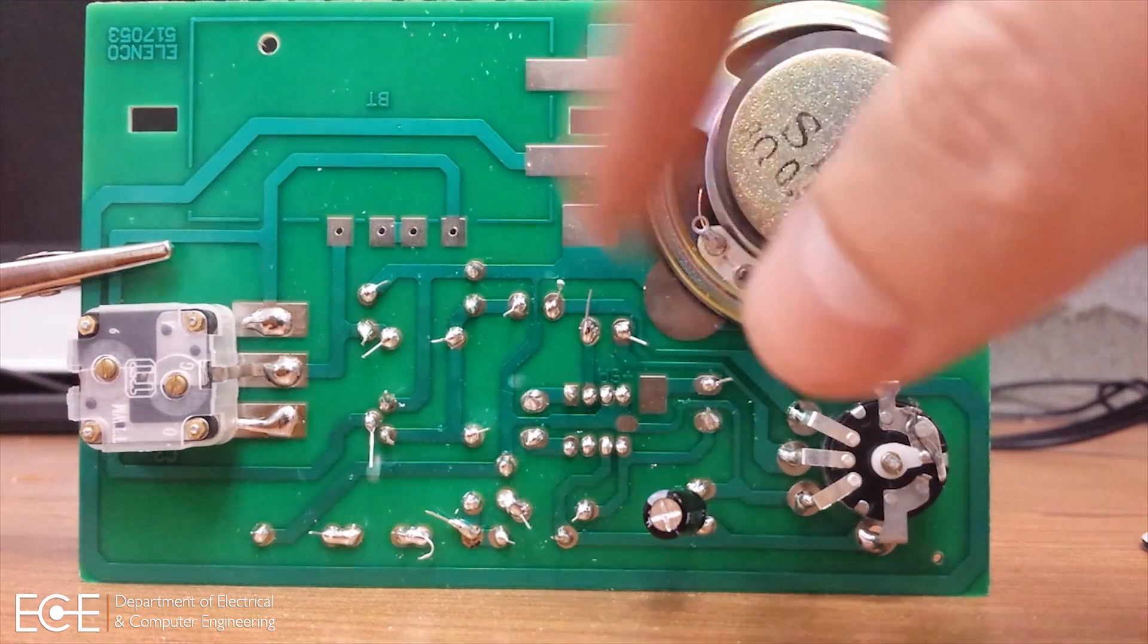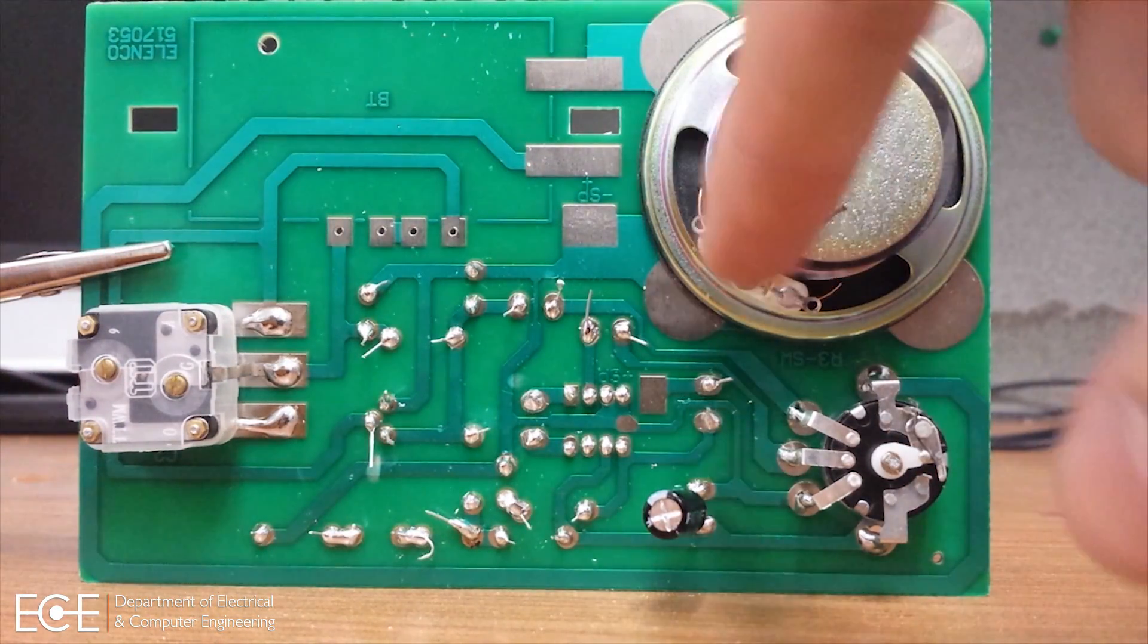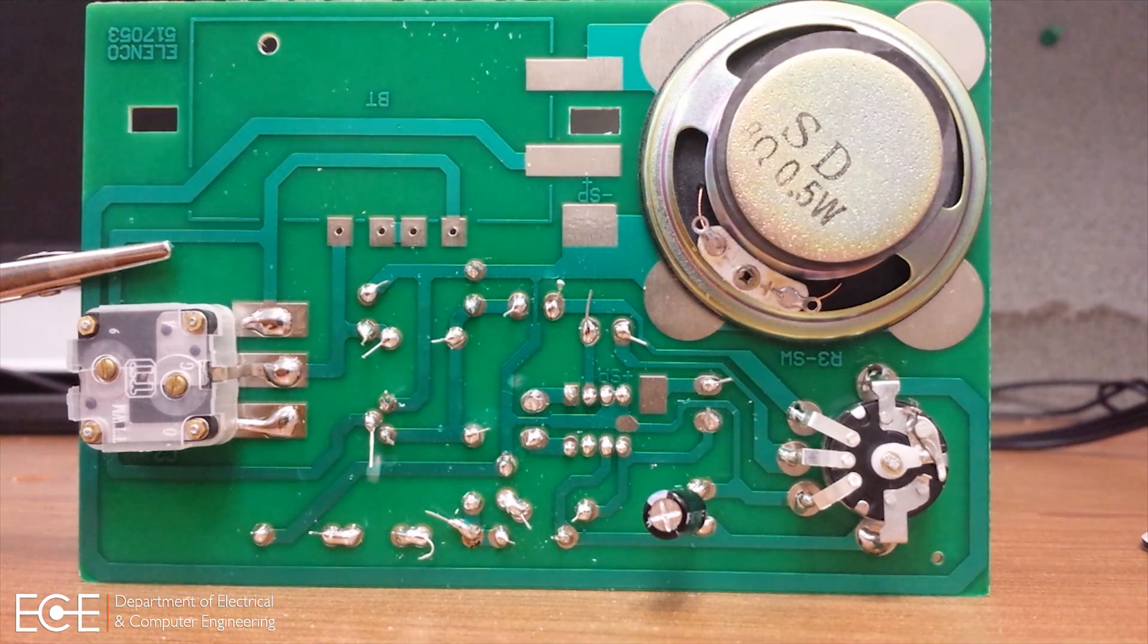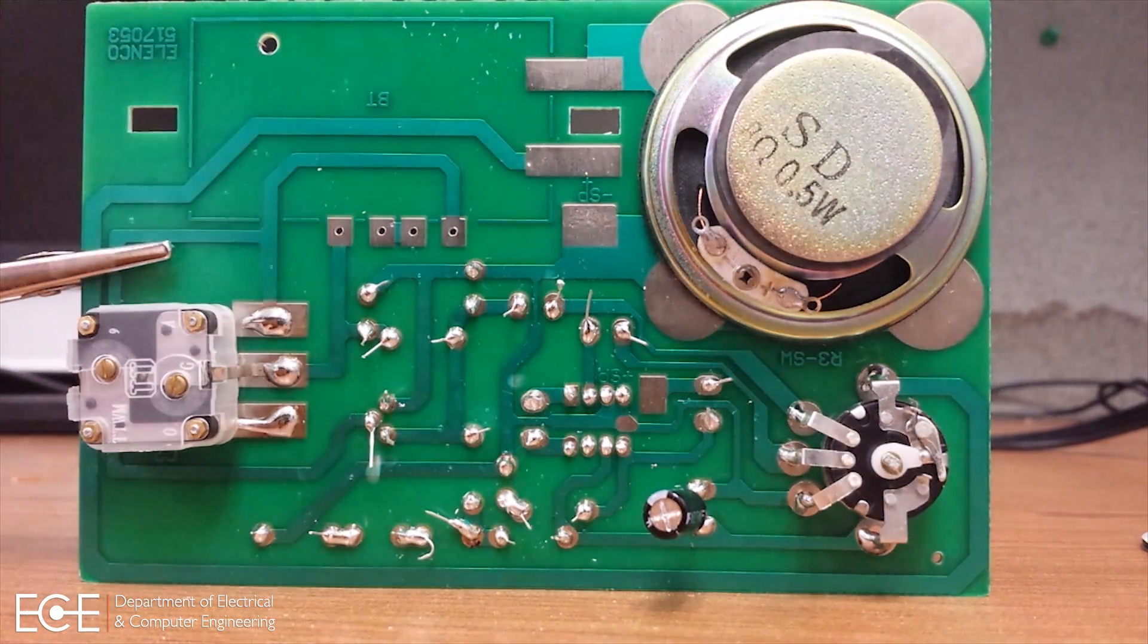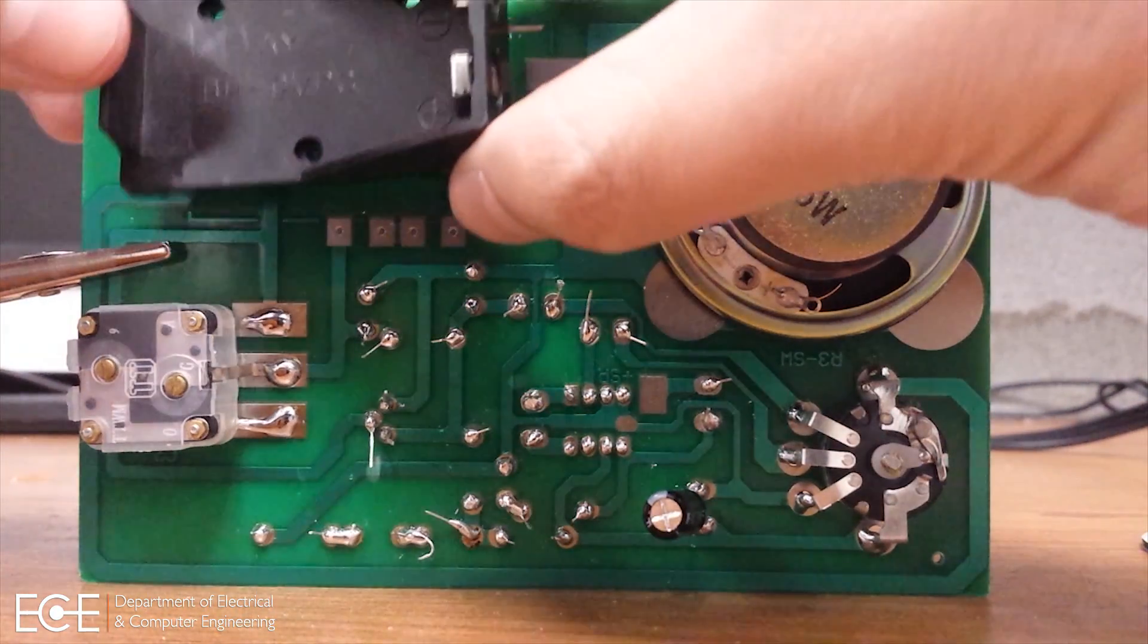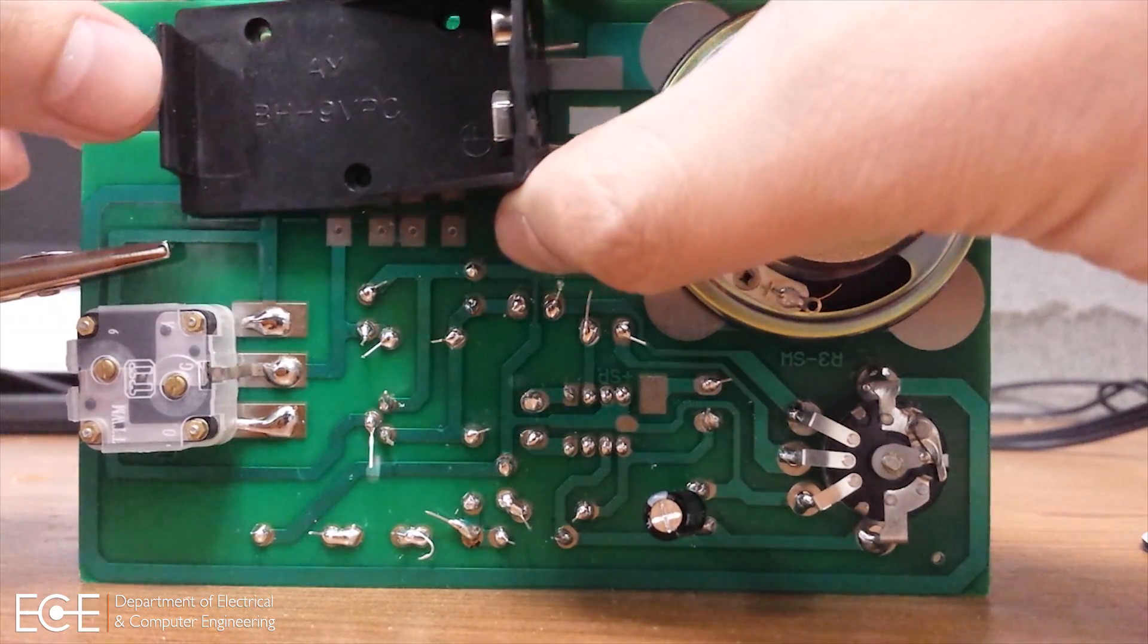Once you've stuck the speaker to the back of the board, we need to connect the wires of the speaker as well as the battery snap. The battery snap comes with a screw should you choose to screw it in before soldering.